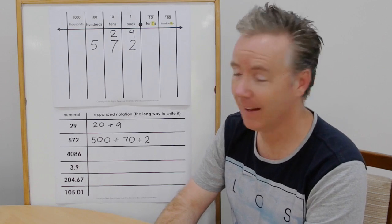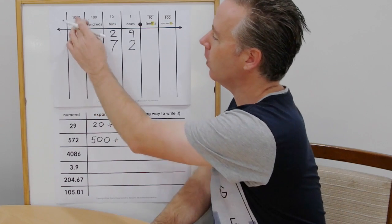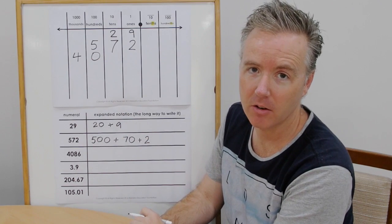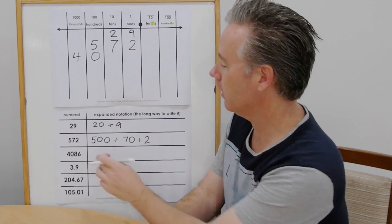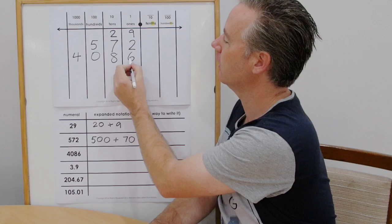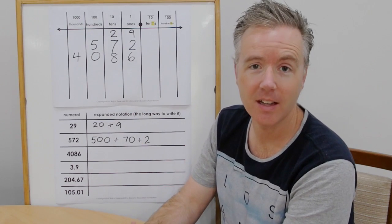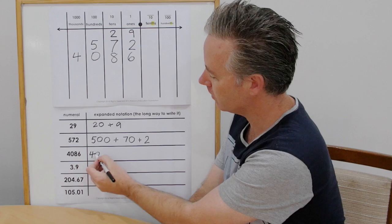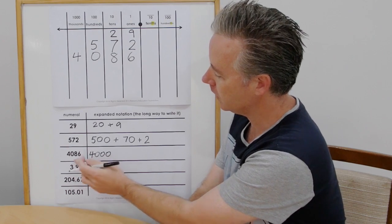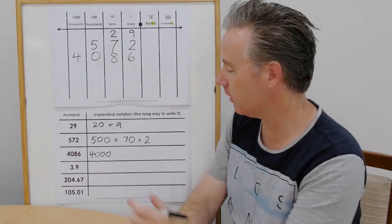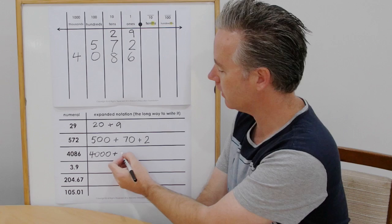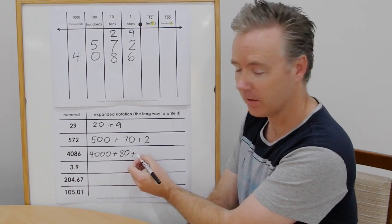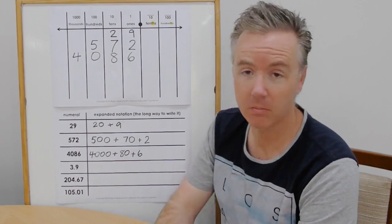The next number, four thousand and eighty-six. Four thousands. We don't have any hundreds. So we need our zero, the hero. It is our placeholder. Eight tens. Six ones. Four thousand and eighty-six. Now let's write that in expanded notation. Four thousands. Now we don't have any hundreds, so we don't actually need to write that. We can leave that one out. Eight tens, because eight tens is eighty, and six ones. Write that in.